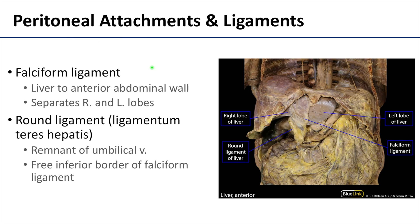There are considerable peritoneal attachments associated with the liver. Starting with the falciform ligament, visible here in this image, it attaches the liver to the anterior abdominal wall. During dissection, the anterior abdominal wall will be reflected, so it will appear as a peritoneal flap between the right and left lobes of the liver. In the inferior border of the falciform ligament you'll find the round ligament, or ligamentum teres hepatis, which continues into a fissure on the inferior surface of the liver.